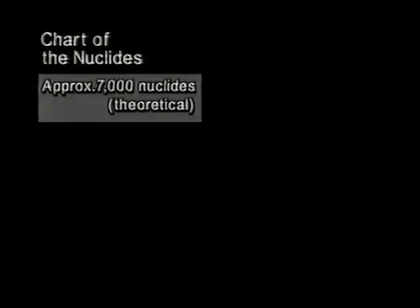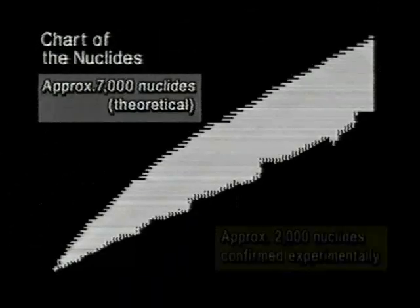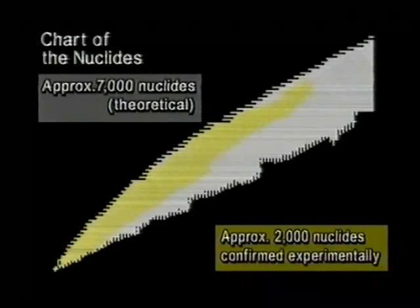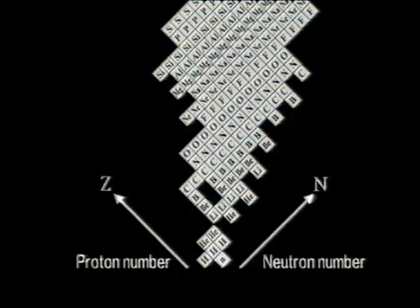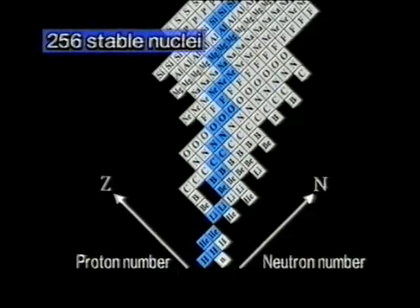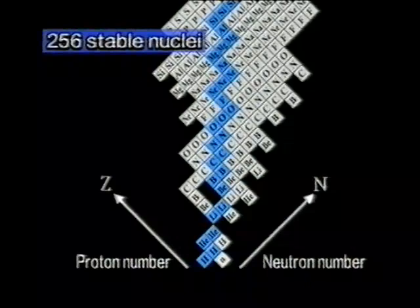Theoretically, the predicted number of nuclides is approximately 7,000, and the number experimentally confirmed thus far is 2,000. Among those confirmed, there are 256 stable nuclei, those that do not decay. These nuclei are located near the center of the chart of the nuclides, and the number of protons and neutrons is comparable.